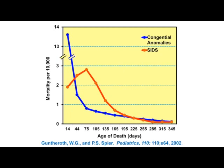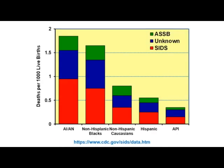The age distribution for SIDS shows that most natural causes of infant death, such as congenital anomalies, tend to peak near birth and fall off exponentially. SIDS has a very different curve: it is actually less common in the first month of life, peaks at about two to four months of age, and 90 to 95% of cases have occurred by about six months. Racial and ethnic differences exist: American Indians, Alaska Natives, and other indigenous populations have the highest SIDS rates; non-Hispanic Blacks are about two and a half times greater than Caucasians; Hispanic Caucasians are slightly lower; and Asian Pacific Islanders have the lowest rate.